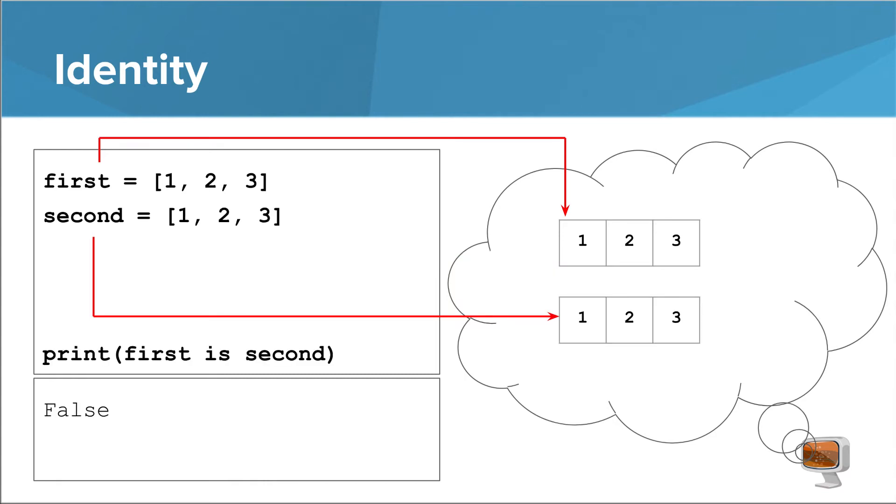Going back to the case where we have two different lists, this expression returns false. Whereas equals equals only cares if the two things have the same contents, IS cares whether they are the same thing.